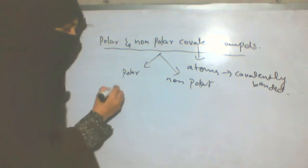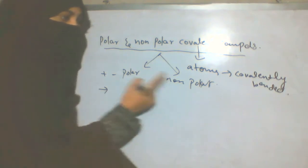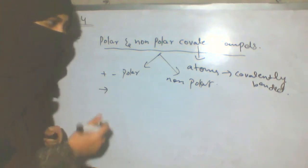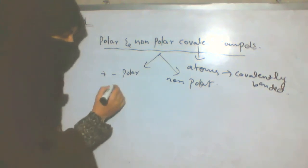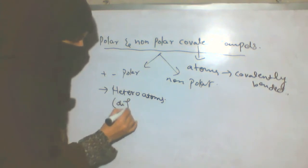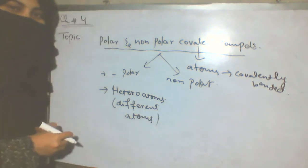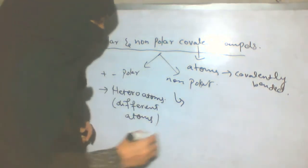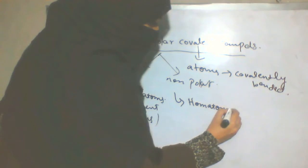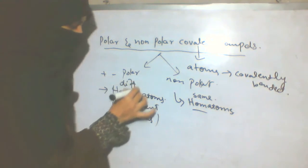Polar compounds will generate poles — positive and negative poles. Non-polar compounds will not generate poles; no positive or negative charge will be generated. Polar compounds will have heteroatoms, meaning different atoms, and non-polar compounds will have homo atoms — homo means same, heteroatoms means different.